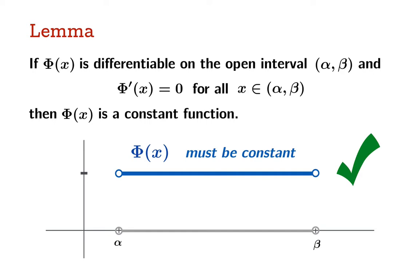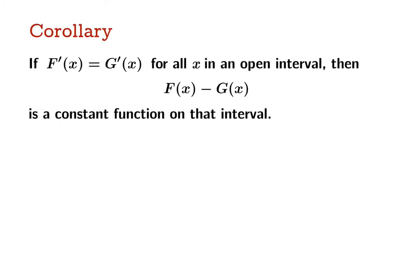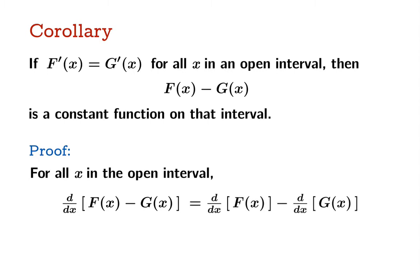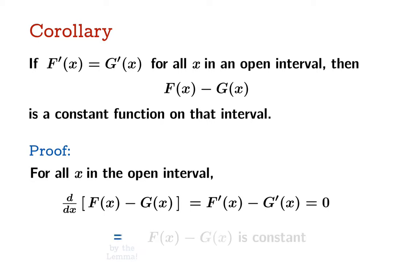Now let's look at an immediate corollary of this — a result that follows immediately. If you have two functions, capital F and capital G, and they have the same derivative value for all x in an open interval, then the difference of those two functions has to be constant. The proof is really easy. For all x in the open interval, the derivative of this difference function — which is the difference of the derivatives — is going to be F prime of x minus G prime of x, and that's going to be zero everywhere. So by the previous lemma, capital F minus G has to be a constant function.